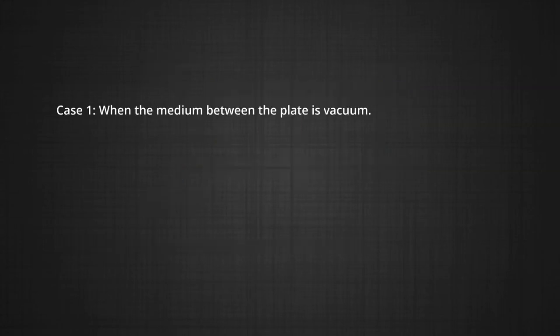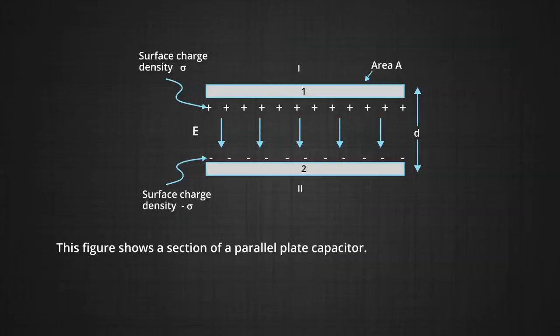Now, case 1: when the medium between the plates is vacuum, that is, we are not keeping any other insulator in between the plates. Now, suppose plate 1 has uniform charge density sigma equal to Q by A. As the charge is spread over its surface, we have used surface charge density sigma here.